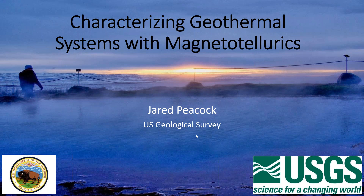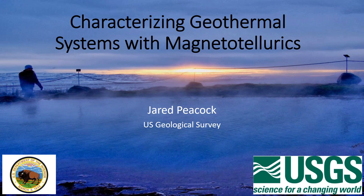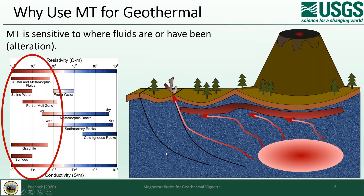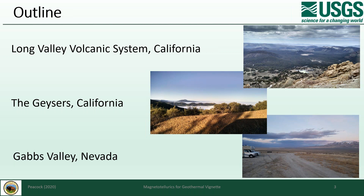I'm Jared Peacock. I work for the US Geological Survey as a research geophysicist. I've been doing MT for about 10 years, so I suppose that puts me about green-belt level. I'll be talking about how we characterize geothermal systems with MT. MT is very sensitive to where fluids are and where they have been, and so MT is probably the best tool to image geothermal systems. The targets we're looking for — fluids and alteration — are all in the conductive region and all have similar conductivity. So when you do an MT survey over geothermal, you need to use other geophysical information to understand what each conductivity anomaly represents. I'll go over three systems in the next seven minutes.